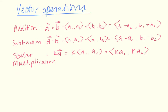Now we have what are called vector operations. Much like numbers, we can add, subtract, and multiply vectors. Given two vectors A and B, each made up of two coordinate points x and y: to add them, simply add the x-coordinates and add the y-coordinates to get a new vector. Subtraction works the same way. For scalar multiplication, take a scalar k and multiply it by the x and y coordinates, giving you k times A1 and k times A2.